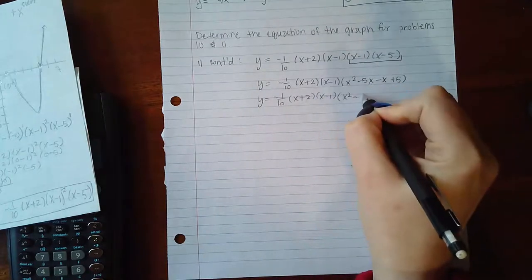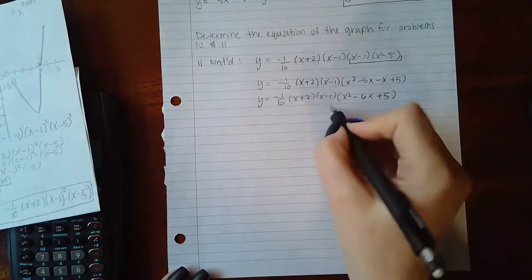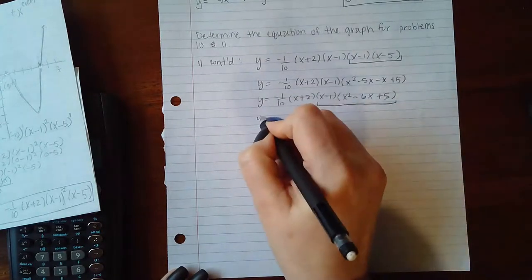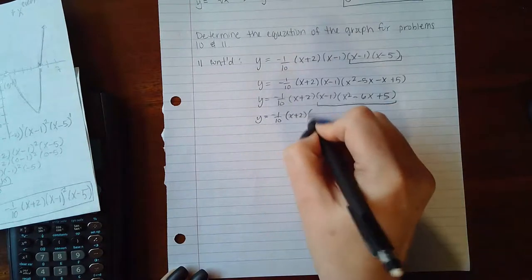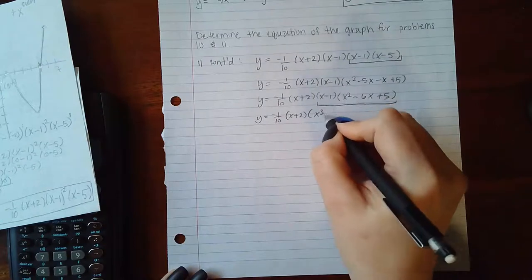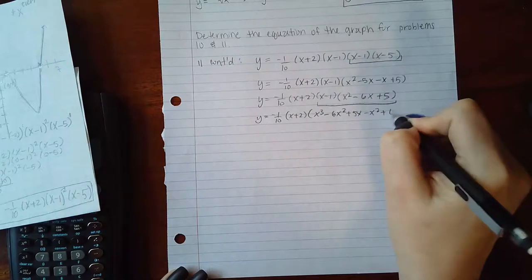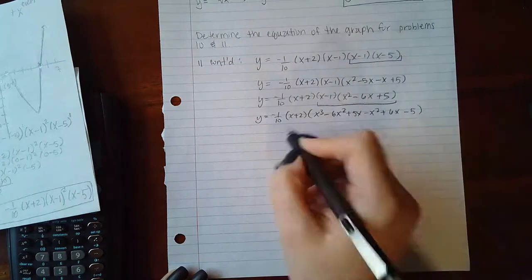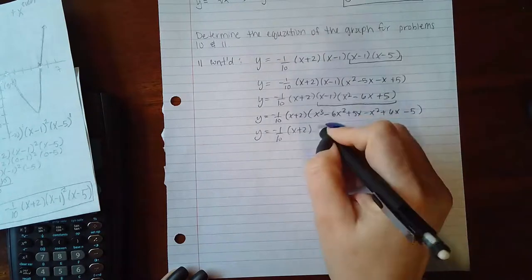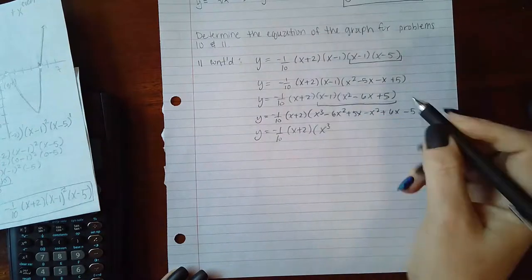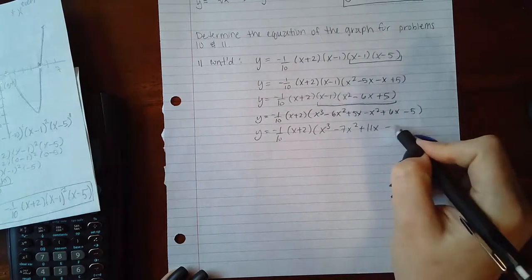Now I'm going to multiply in the next factor. I get x cubed minus 6x squared plus 5x minus x squared plus 6x minus 5. If I combine my like terms, I have x cubed minus 7x squared plus 11x minus 5.